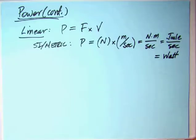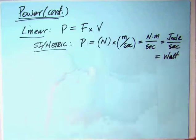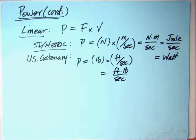Let's look first at the linear systems. Power equals force times velocity. In the SI metric system, we've got force in newtons, the velocity typically in meters per second. That gives you a newton meter per second. A newton meter is a joule, a unit of work. Power is the rate of doing work. So you've got joule per second, and that's what we refer to as a watt.